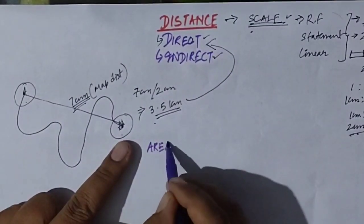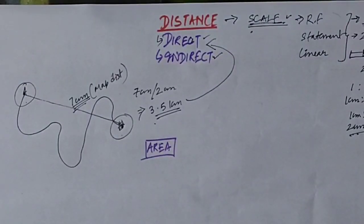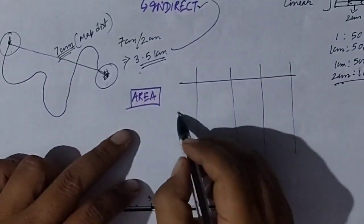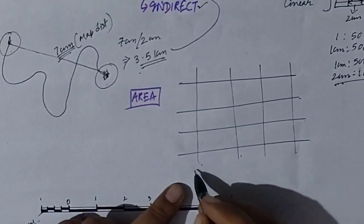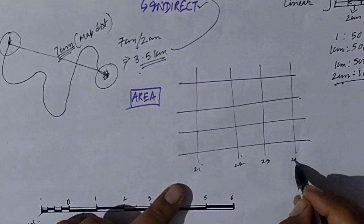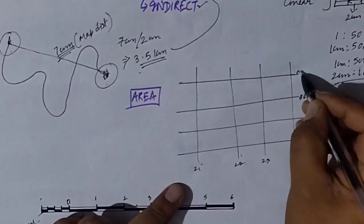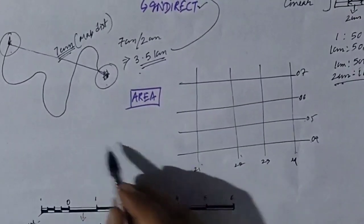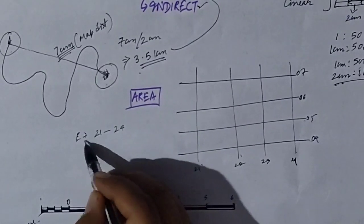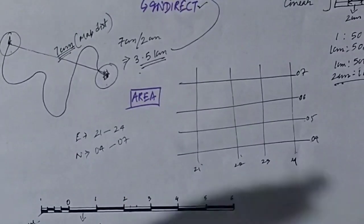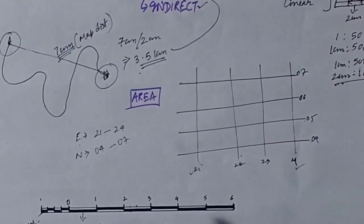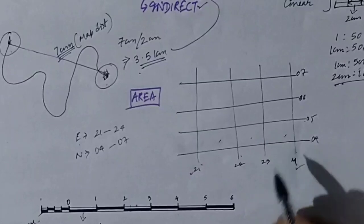Now one more important thing: we can also calculate area with the help of the scale. The questions that come relate to the grids on the map — the eastings and northings. For example: eastings 21 to 24 and northings 04 to 07. The question would be: find the area enclosed by eastings 21 to 24 and northings 04 to 07.